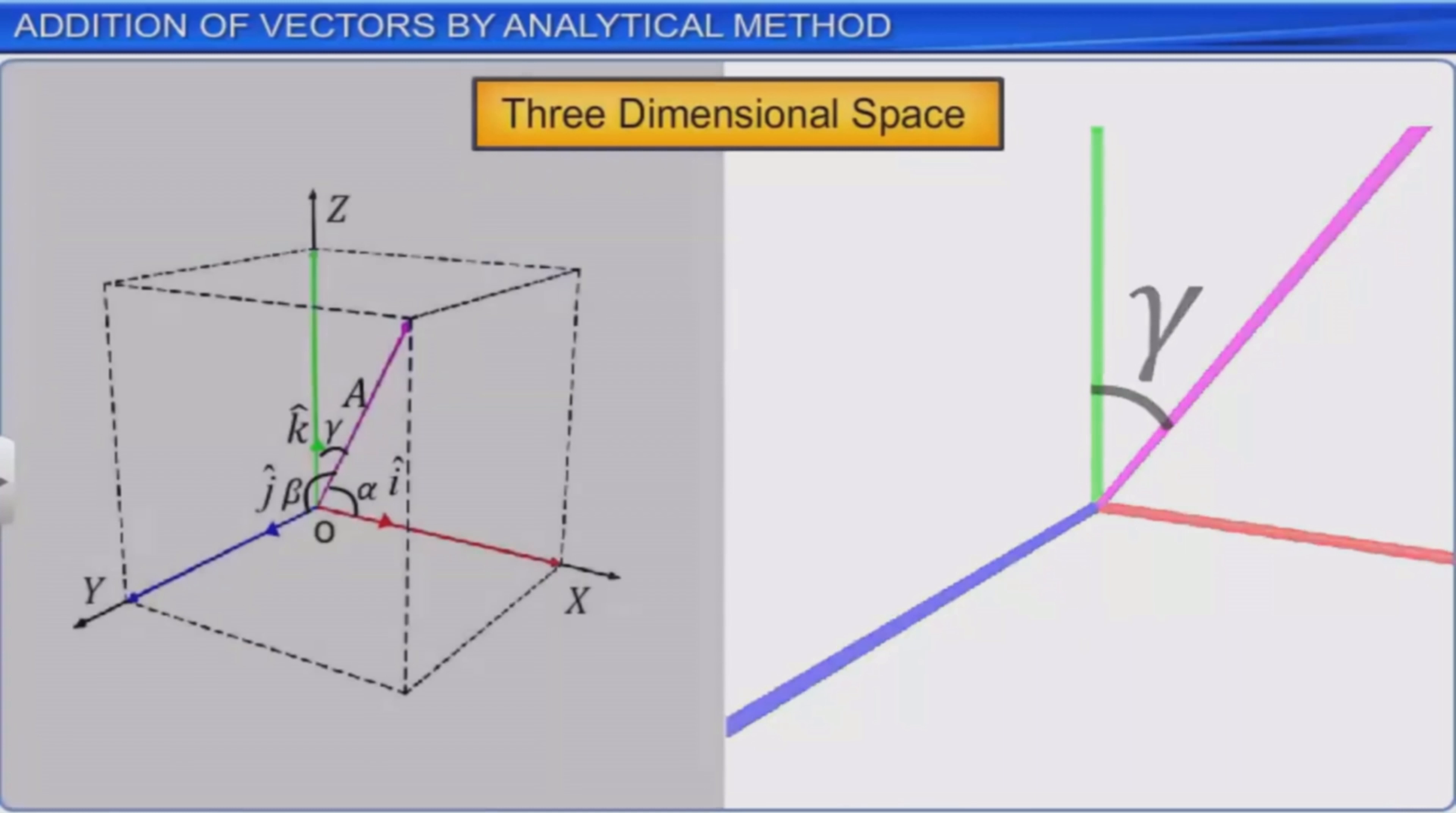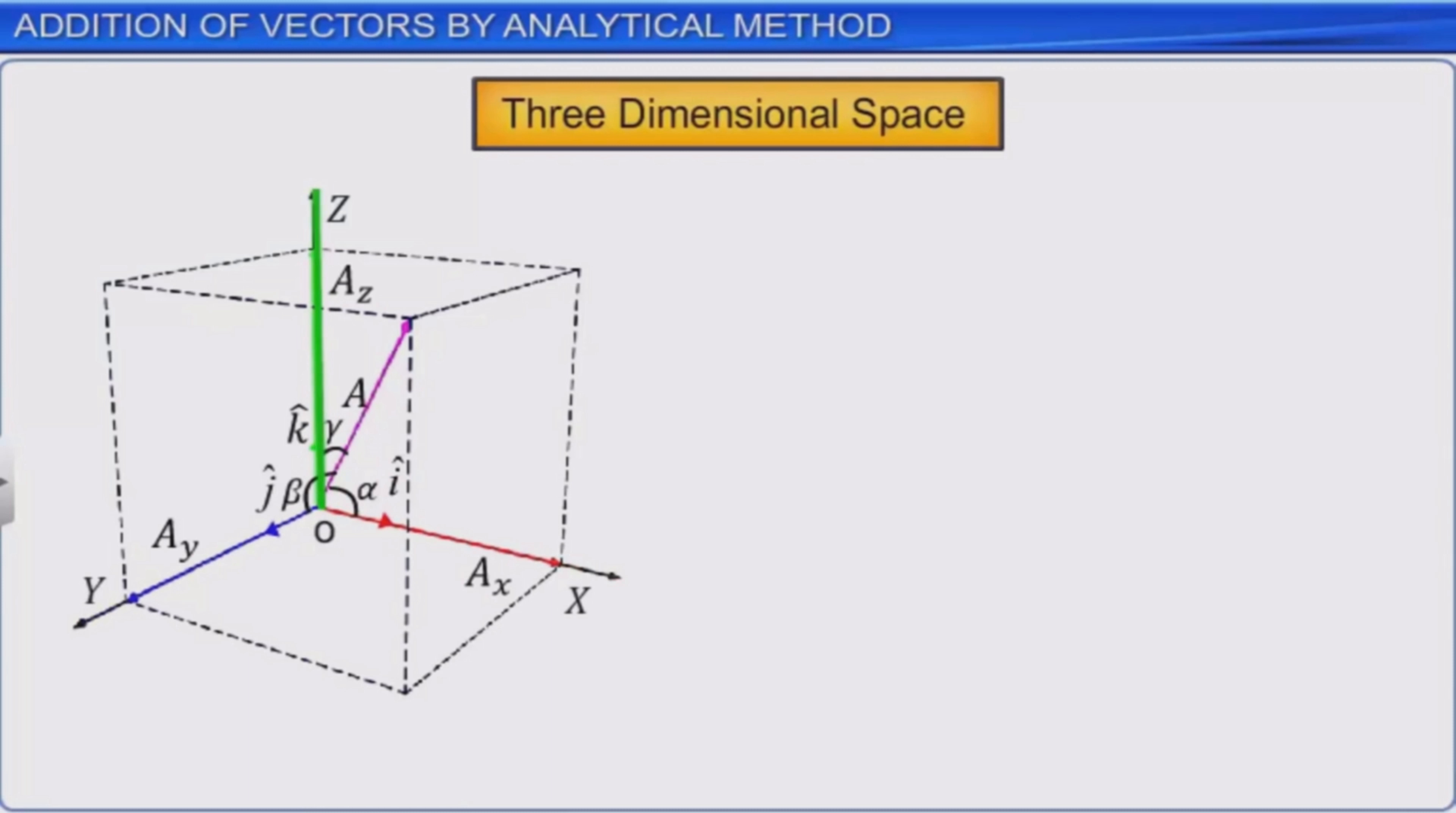In this case, its three components along x, y, and z direction can be written as Ax is equal to A cos alpha, Ay is equal to A cos beta, and Az is equal to A cos gamma.